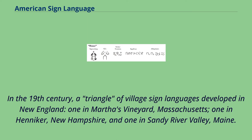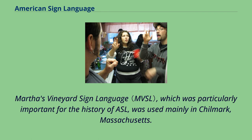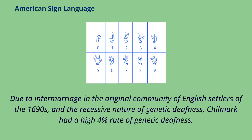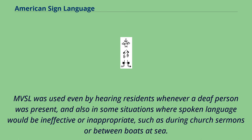In the 19th century, a triangle of village sign languages developed in New England: one in Martha's Vineyard, Massachusetts, one in Henneker, New Hampshire, and one in Sandy River Valley, Maine. Martha's Vineyard Sign Language, which was particularly important for the history of ASL, was used mainly in Chilmark, Massachusetts. Due to intermarriage in the original community of English settlers of the 1690s and the recessive nature of genetic deafness, Chilmark had a high 4% rate of genetic deafness. MVSL was used even by hearing residents whenever a deaf person was present, and also in some situations where spoken language would be ineffective or inappropriate, such as during church sermons or between boats at sea.